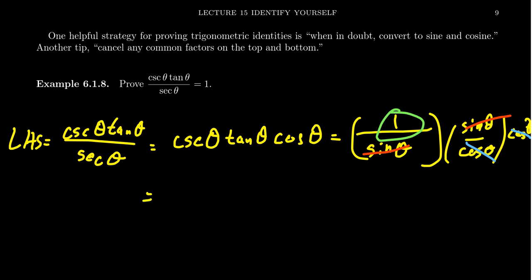And so that finishes the proof that cosecant times tangent divided by secant is equal to 1, which was the right-hand side. Therefore, we've proven our trigonometric identity. And we did this by converting everything to sines and cosines and then simplifying. That's trigonometric identity tip number 2.